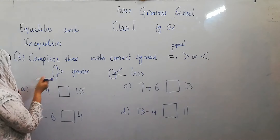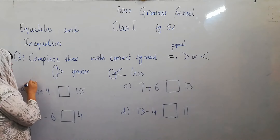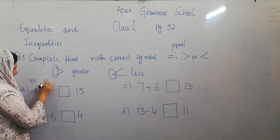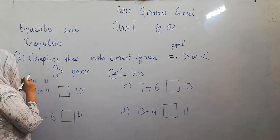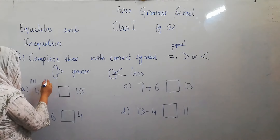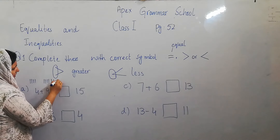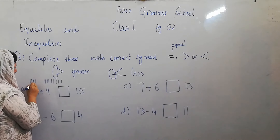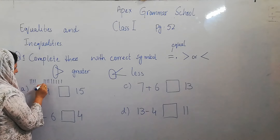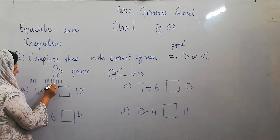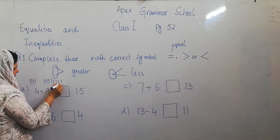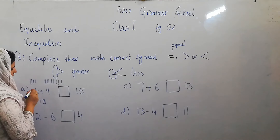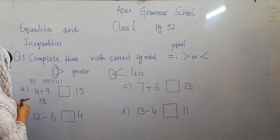4 plus 9 — let's count. Counting 4 tally marks: 1, 2, 3, 4. Now counting 9 tally marks: 1, 2, 3, 4, 5, 6, 7, 8, 9. Total count: 1, 2, 3, 4, 5, 6, 7, 8, 9, 10, 11, 12, 13. Yes, this is 13.